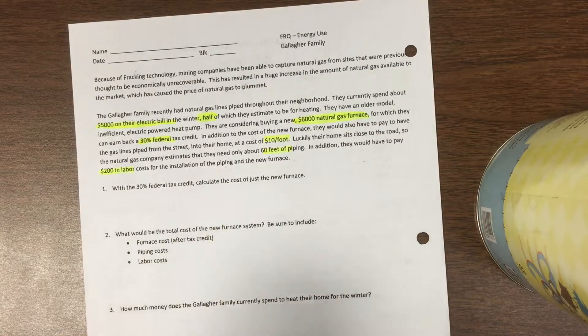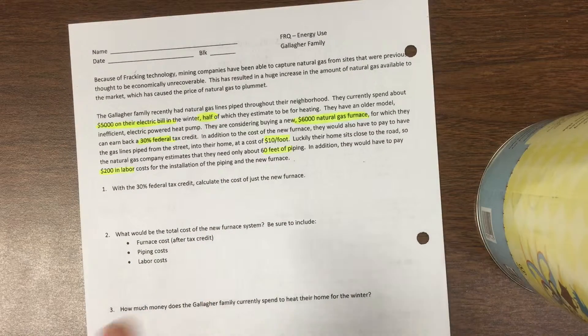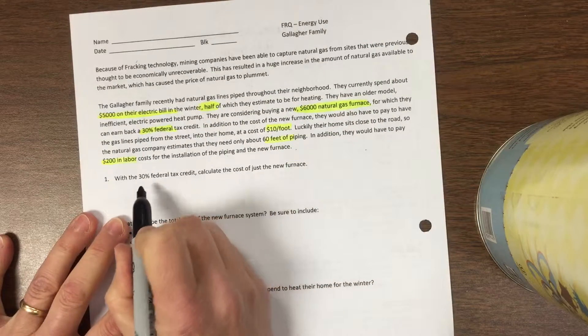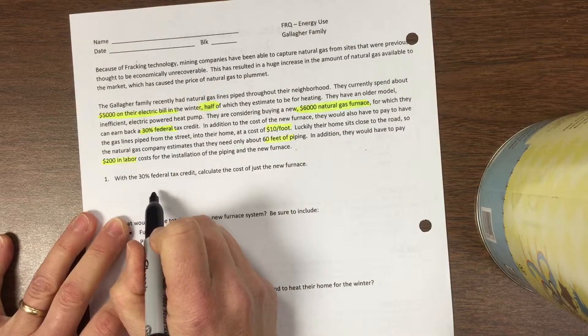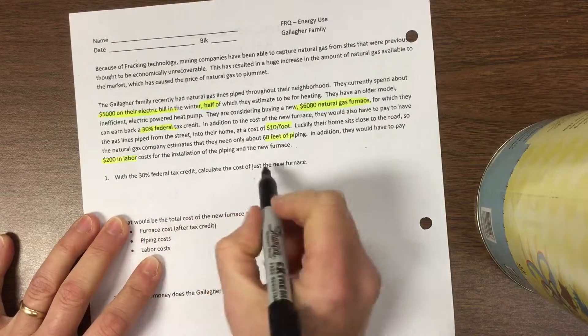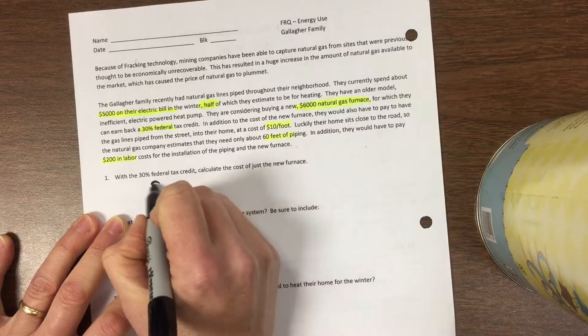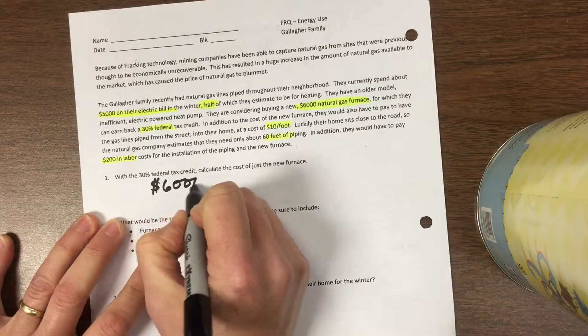If they buy this new $6,000 furnace, they'll get a 30% federal tax credit, so the cost of the furnace is not going to actually be $6,000. $6,000 times 30% is $1,800.